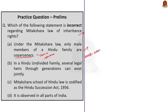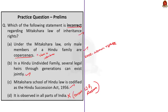Statement two: in a Hindu Undivided Family several legal heirs through generations can exist jointly — this statement is correct. Statement three: Mitakshara school of Hindu law is codified as the Hindu Succession Act of 1956 — this is also correct. Statement four: it is observed in all parts of India — this statement is incorrect. Mitakshara school of Hindu law is followed in every state in India except West Bengal and Assam. Since the question asks for the incorrect statement, the correct answer is option D.